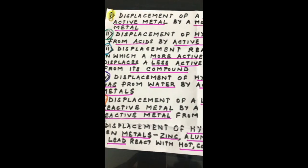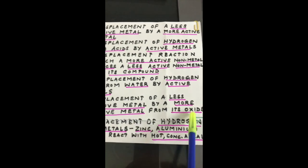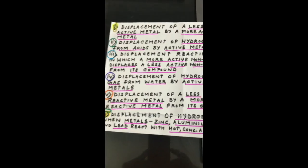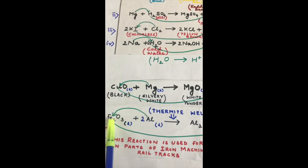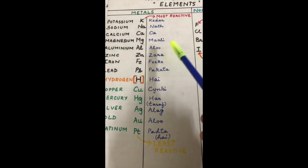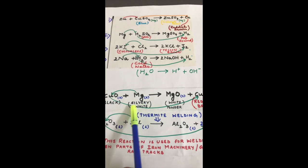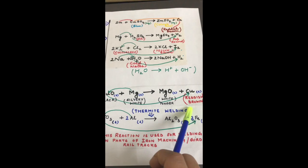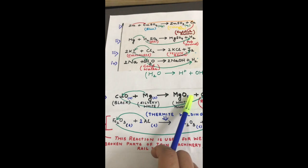The fifth type of displacement reaction is displacement of a less reactive metal by a more reactive metal from its oxide — an industrially important reaction. Magnesium is more reactive than copper as seen in the activity series. So magnesium can displace copper from copper oxide (CuO), releasing reddish-brown copper metal. Magnesium combines with oxygen to form magnesium oxide (MgO) — magnesium has valency 2 and oxide has valency 2, so the product is MgO.